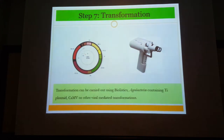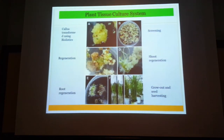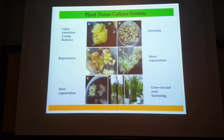You then go through your regular cycle: callus induction, screening for callus based on reporter genes or hygromycin resistance, regeneration of roots, and regeneration of full plants. At this stage you can use marker-assisted selection to screen for the desired traits.